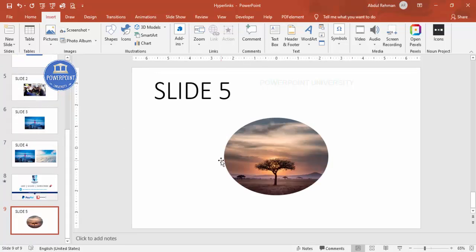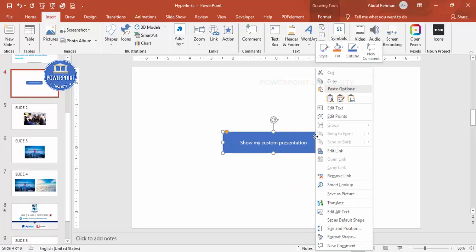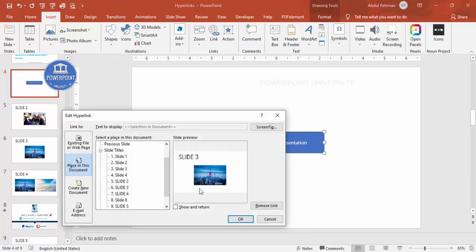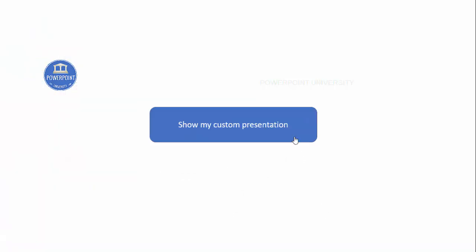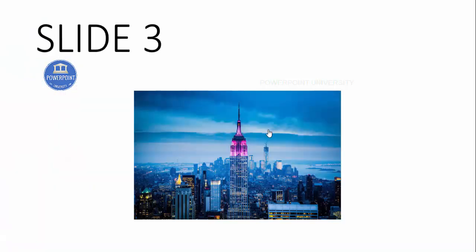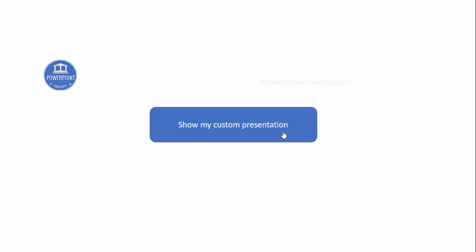After the custom show ends, it ends the slideshow entirely. To return to the main presentation instead, right-click the shape and choose Edit Link, then check 'Show and Return' and click OK. Now when you run the slideshow and click the button, it shows the custom slides — slide three, two, four, five — and then returns to the main presentation.